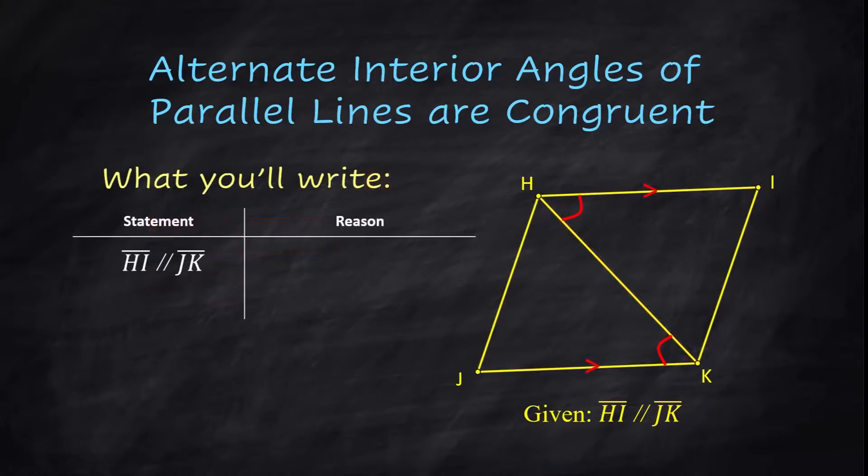We start with the given information that segment HI is congruent to segment JK and that's given. Then we go into our congruent statements about these angles. Angle HKJ is congruent to angle KHI and the reason is they are alternate interior angles. So alternate interior angles are congruent.